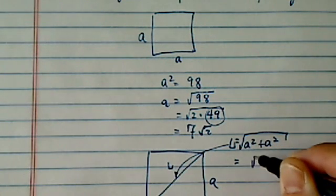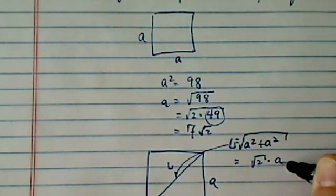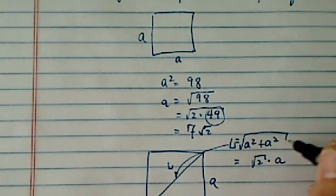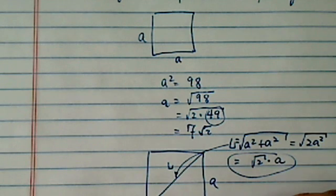Which is equal to radical 2 times A, because if you would add this one together, you have 2A squared. Okay, so that's radical A. So L is equal to radical 2 times whatever A we found, which is 7 radical 2.